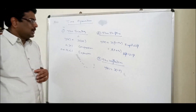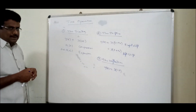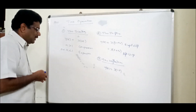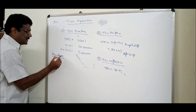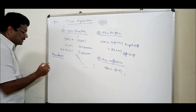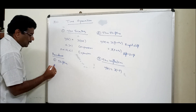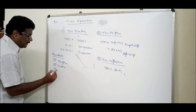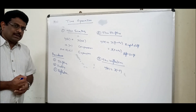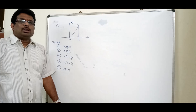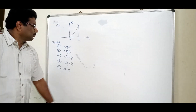Sometimes we may have only one operation, sometimes two, and sometimes all three operations together. In that case, which operation should be done first? We call this the precedence rule. Always you should do shifting first, then scaling, then reflection.